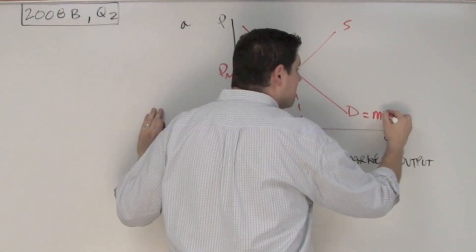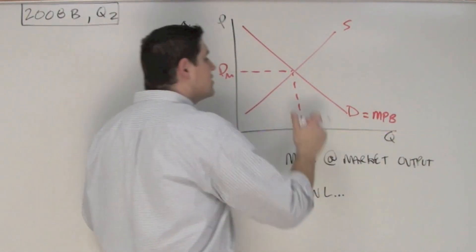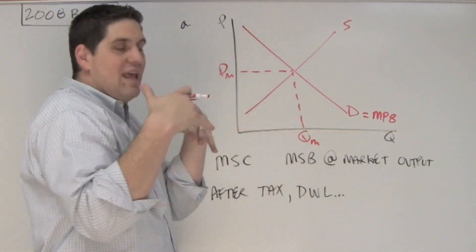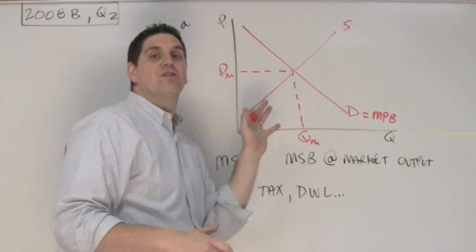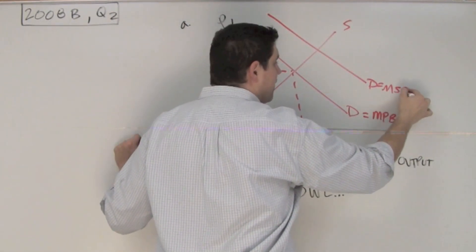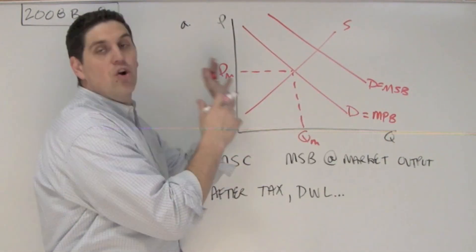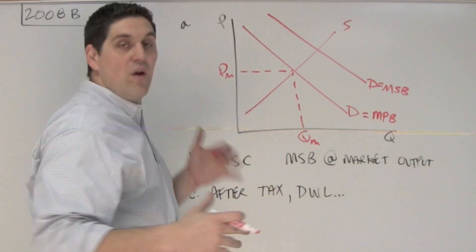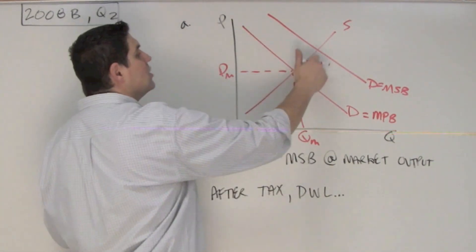This is the marginal private benefit. This only factors in the benefits that individuals get from those vaccines. There's a second demand curve. That demand curve is out here, which represents the marginal social benefit. If people recognize the external benefits of getting a vaccination, that other people don't get sick, then the demand should be over here.